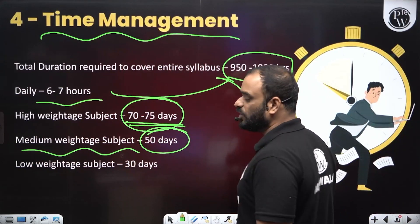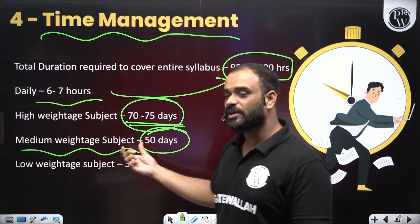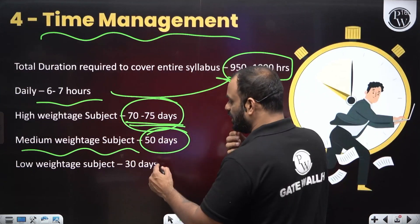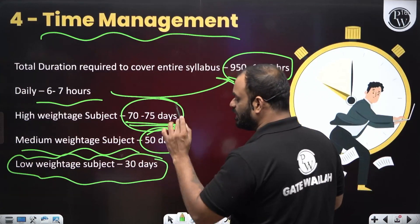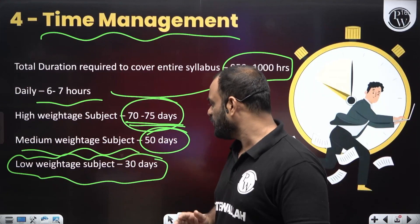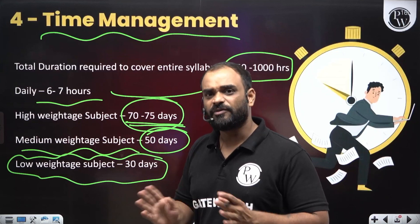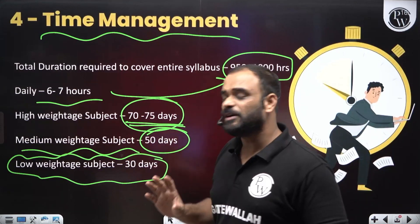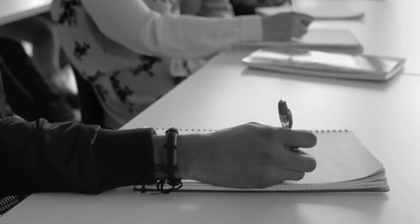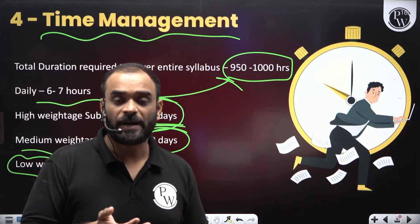For medium-weightage subjects, approximately 50 days are required if you dedicatedly give 6 to 7 hours on a daily basis. Then try to cover the low-weightage subjects in the remaining 30 days. If you add all these durations, you get approximately 150 to 160 days — within which you are able to cover all the syllabus, complete the test series, understand the class notes, cover the PYQ, and practice questions.